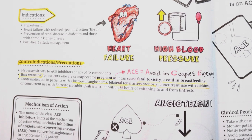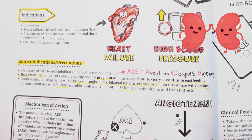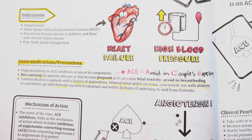ACE inhibitors should not be used in patients with bilateral renal artery stenosis, because it can worsen renal function in patients who already have this underlying issue. Concurrent use of aliskiren with ACE inhibitors can increase the risk of hyperkalemia, so this is also a contraindication.